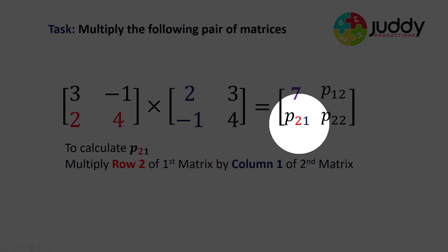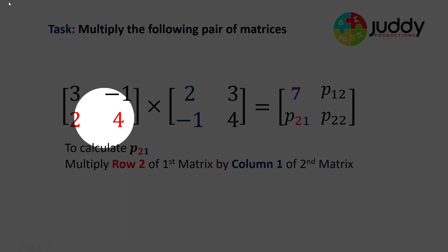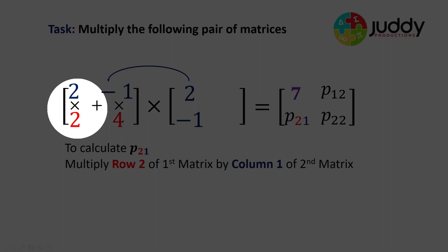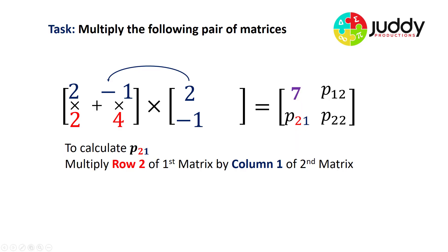Let's consider now element P21. As the labeling suggests, that takes row two of the first matrix and column one of the second matrix. We'll remove the others. We'll move the column one of the second matrix above row two of the first matrix and multiply the terms. Two times two and minus one times four. We multiply those terms and we add them together. We end up with a value for element P21 of zero. And we place that in our product matrix.